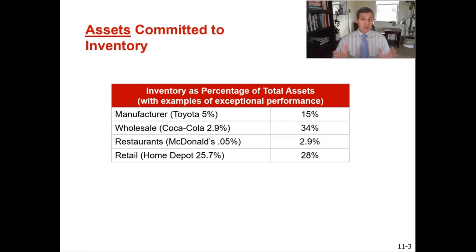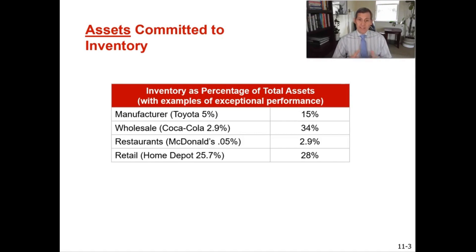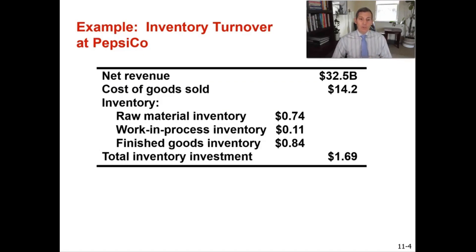McDonald's is at only 0.05% — less than 1% of all McDonald's assets is tied up in inventory. That makes sense because McDonald's is one of the largest real estate holding companies in the world with almost $30 billion in real estate value, so having less than 1% in lettuce, tomatoes, and cheese makes sense mathematically. In retail, Home Depot at 25.7% actually performs better than most retailers at about 28%. Retail is a delicate balance — you have to have inventory when people walk in, but you don't want so much that you can't purchase other things.